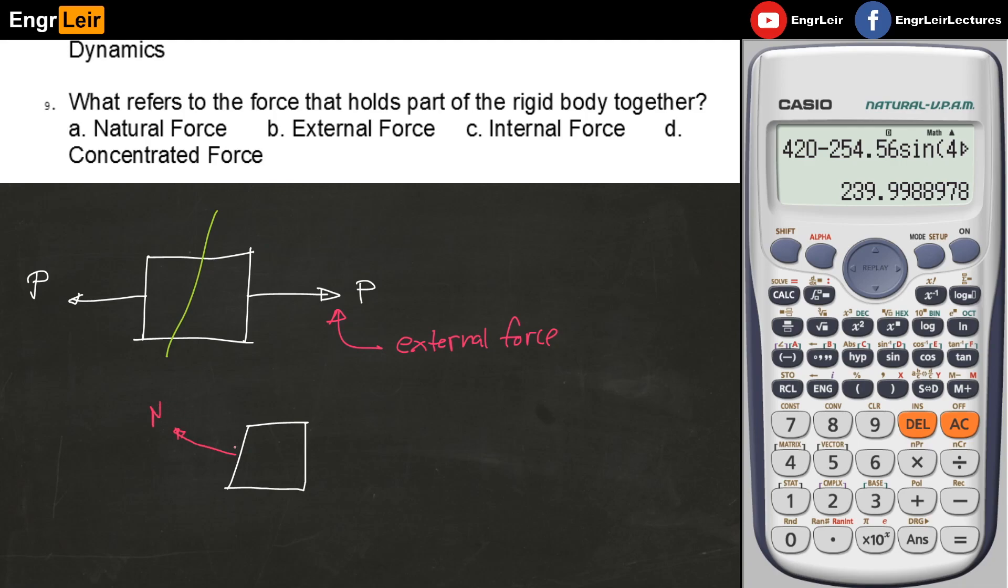I have a normal force and a shear force. This is P. And this is related to the external force - it follows equilibrium. When I cut it, I expose the internal forces. We call this the internal forces. If there were no internal forces, this wouldn't be one object - it would separate. So that's why the answer here, the forces that hold parts of the rigid body together in engineering mechanics, we call them the internal forces. Letter C.